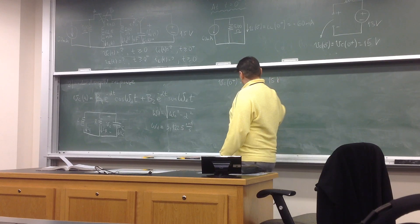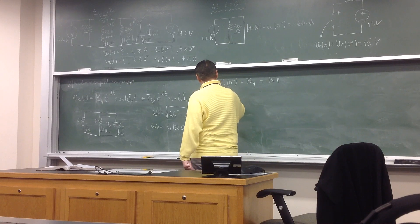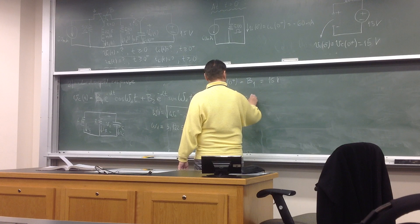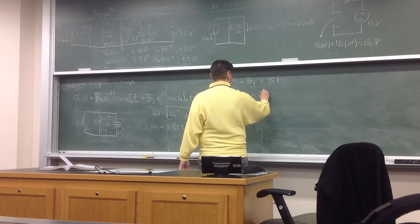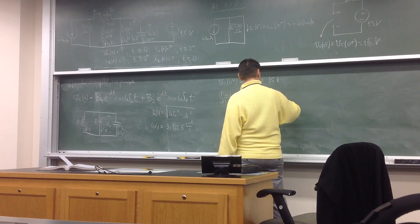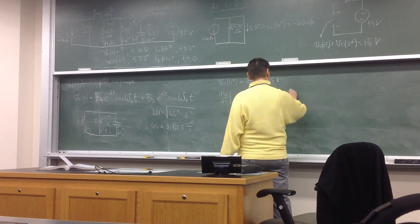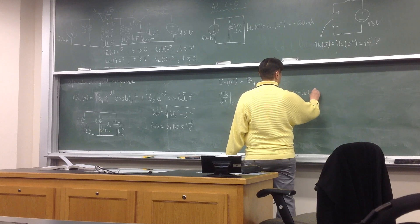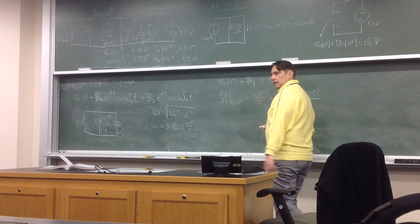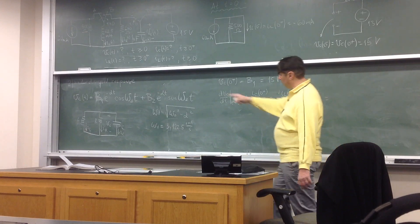And then dVc/dt, that's equal, equal zero plus, is equal again ic(0+) over C, which is equal minus iL(0+) minus iR(0+) divided by C. You know how to calculate this now, and then if you take the first derivative of that, that's equal...